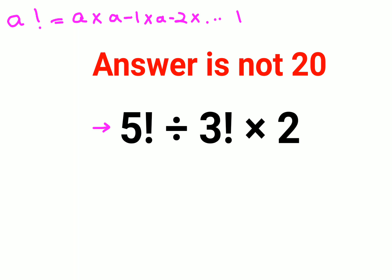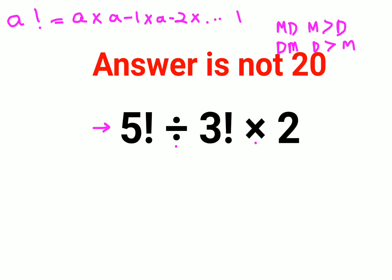Here we have division and multiplication. Please understand — people following PEMDAS will think that multiplication has to be done first, and people following BODMAS will think division has to be done first. Please remember it's not like that. Multiplication and division hold equal precedence, so in case of these kinds of sums you need to just go from left to right.